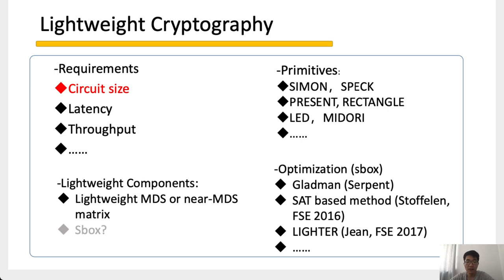Simon, Speck, Present, Rectangle, LIGHT, and Midori are several well-known block ciphers. Apart from dedicated designs such as the Simon block cipher, lightweight components are more popular choices to design lightweight primitives. There have been a lot of designs for lightweight MDS or near-MDS matrices.